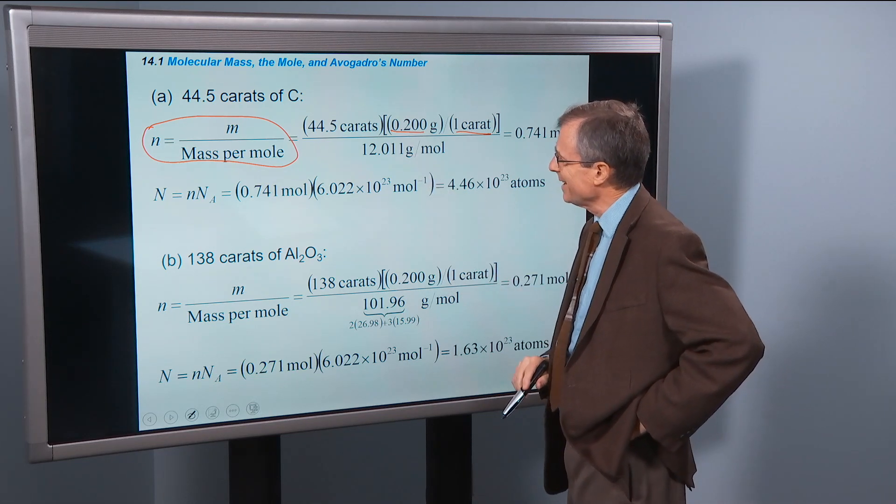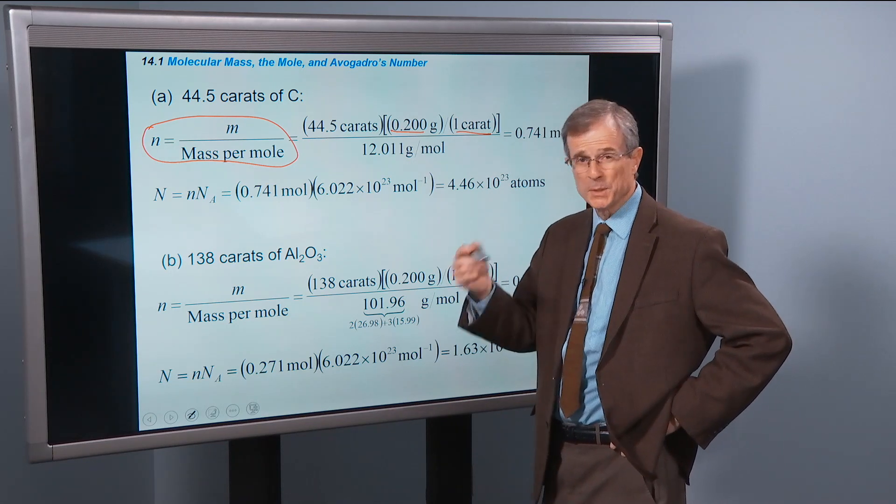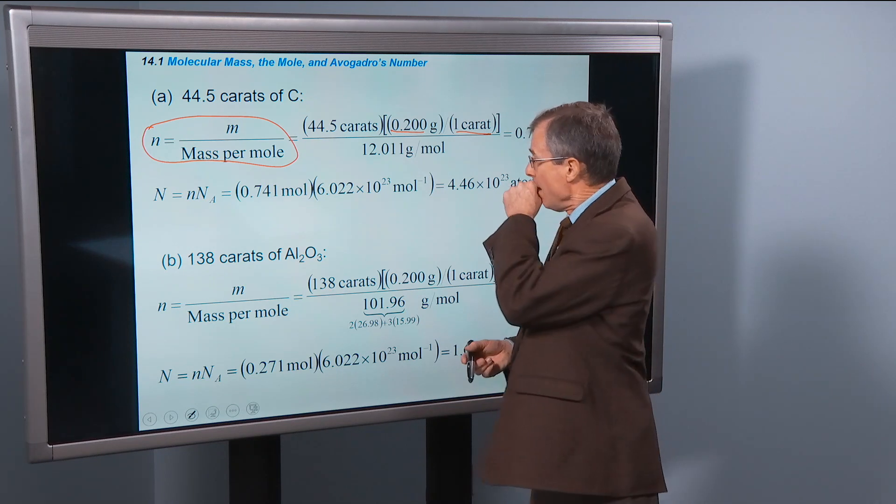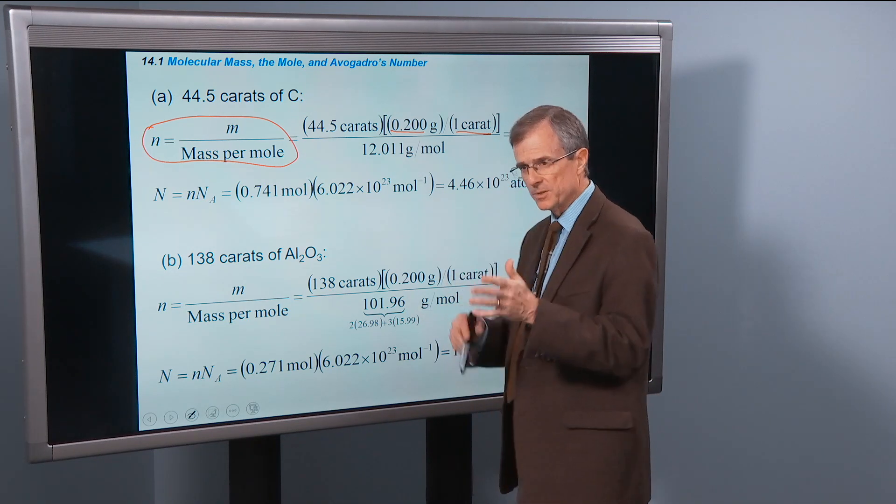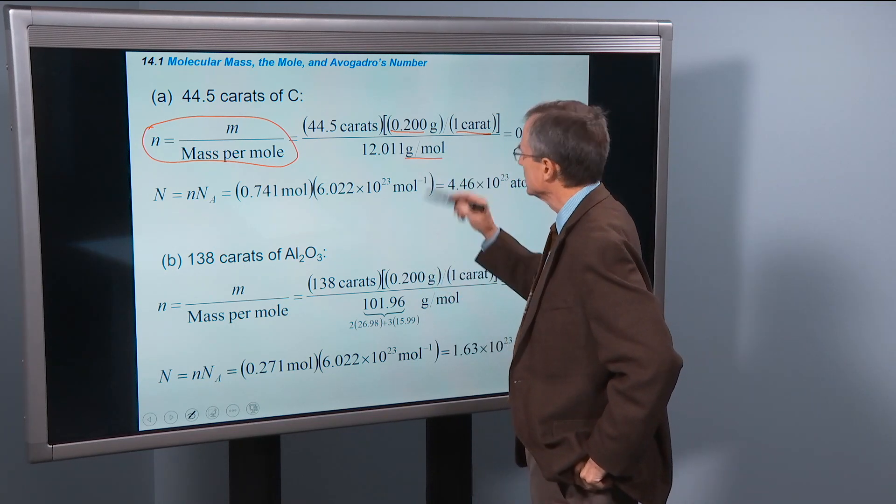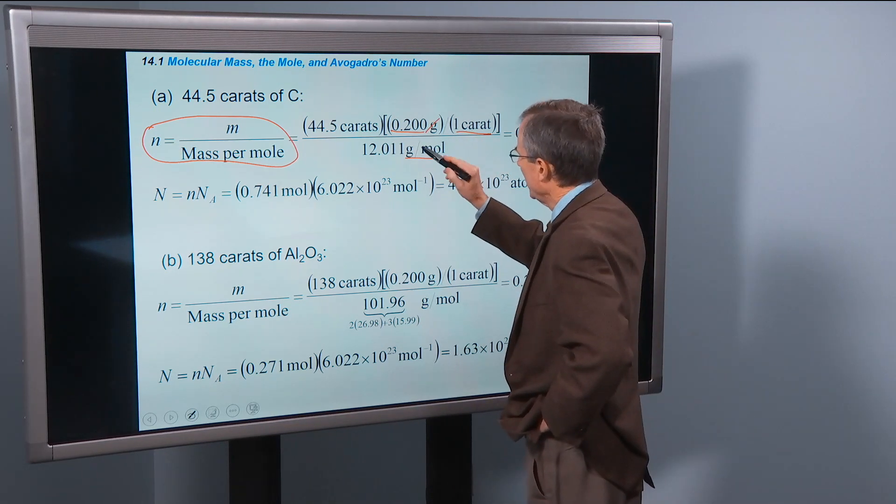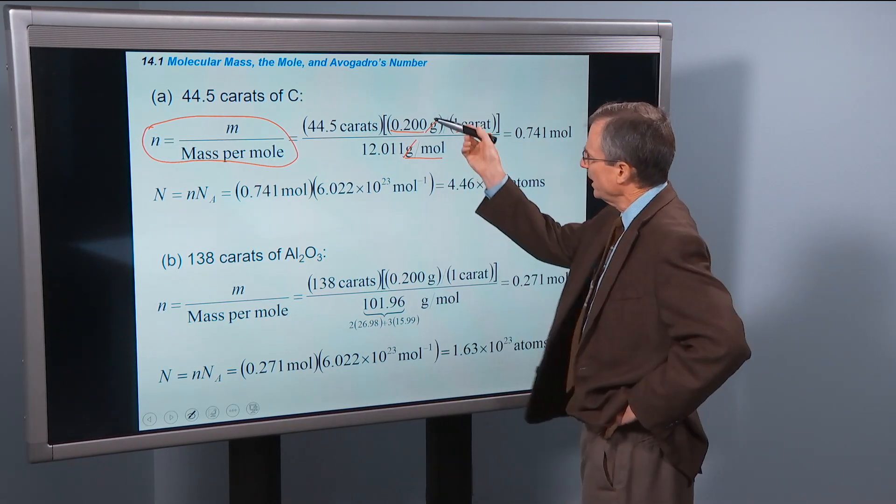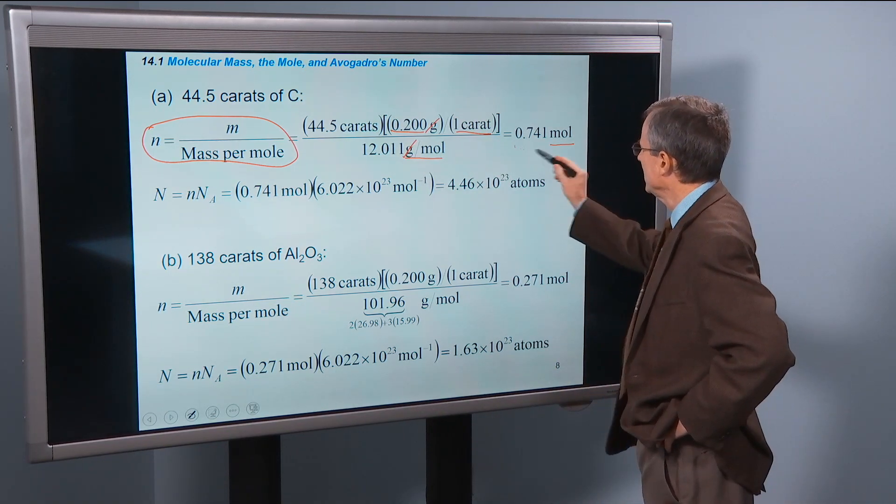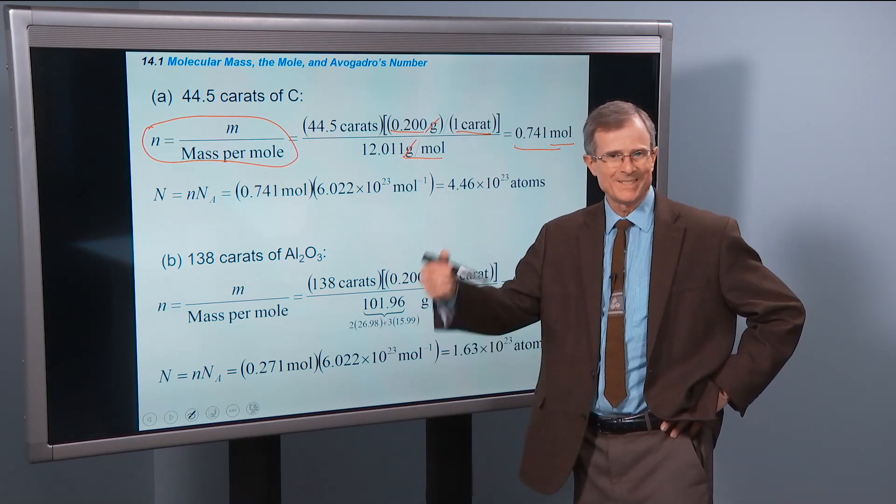The mass is 44.5 carats, but we know there's 0.2 grams per carat, so that'll give us a mass in grams in the numerator. In the denominator, we need the atomic mass of carbon, the mass per mole. We've shown in the figures a couple of times, it's close to 12. But because of those carbon-13 atoms, it's actually 12.011 grams per mole. The units: grams will cancel, and we have 1 over 1 over moles, so the moles come up in the numerator. That gives us 0.741 moles of carbon in the Hope Diamond.